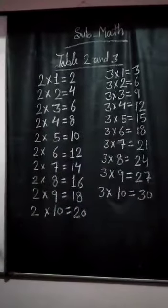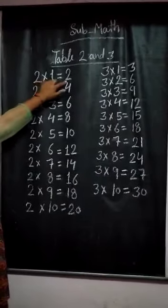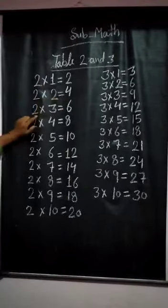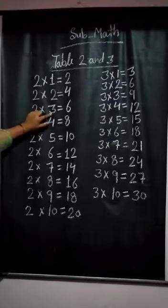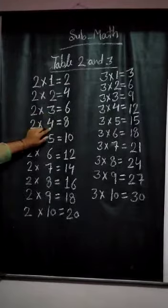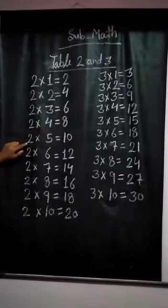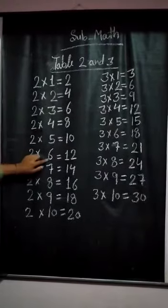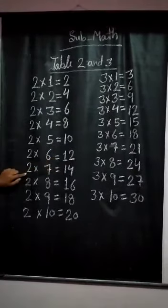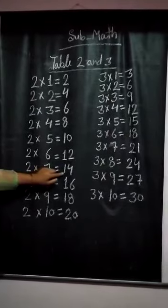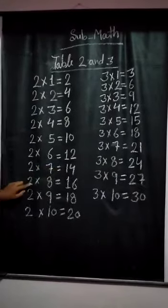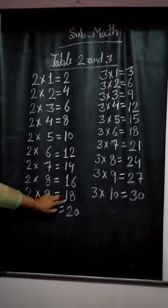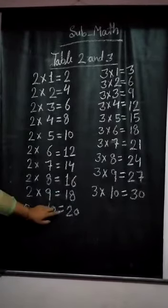Let me recite again. 2 times 1 is 2. 2 times 2 is 4. 2 times 3 is 6. 2 times 4 is 8. 2 times 5 is 10. 2 times 6 is 12. 2 times 7 is 14. 2 times 8 is 16. 2 times 9 is 18. 2 times 10 is 20.